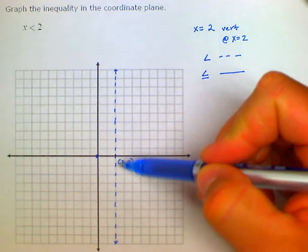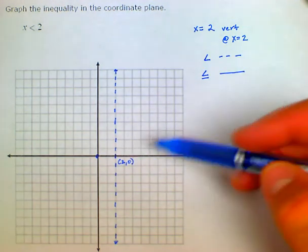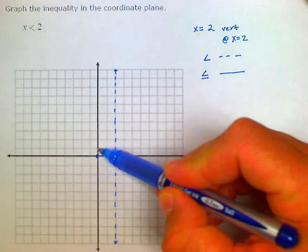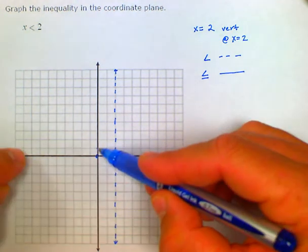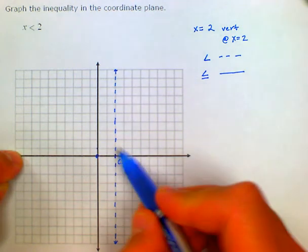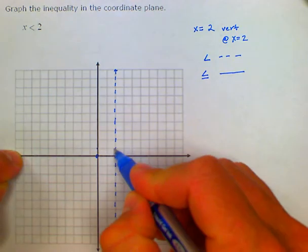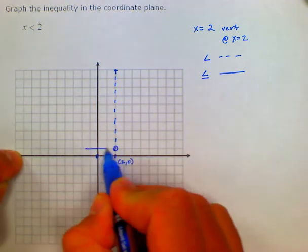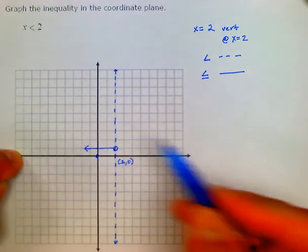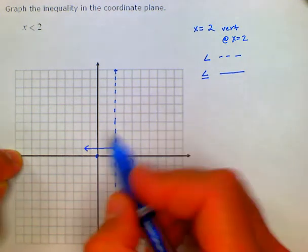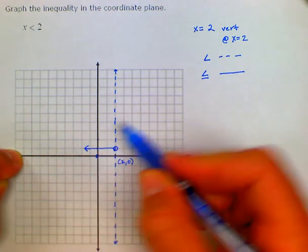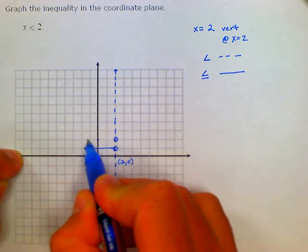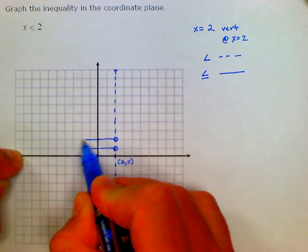So if I look at y equals 1, at y equals 1, I'm going to have a value that is less than 2. I would have an open circle at 2 and everything less than 2 would be included. The same at y equals 2, I would have an open circle and everything less than 2 would be included.